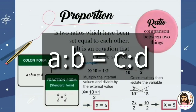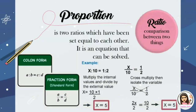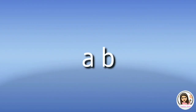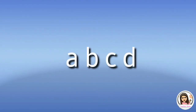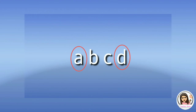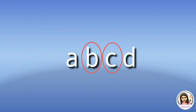In A is to B and C is to D, there are four terms: A, B, C, and D. The first and fourth terms A and D are called the extremes, while the second and third terms B and C are called the means of the proportion.